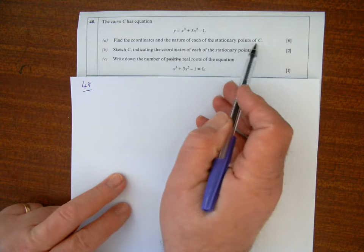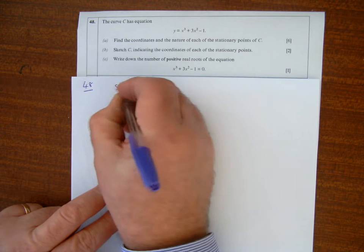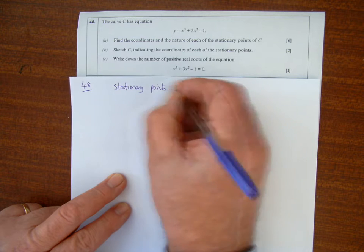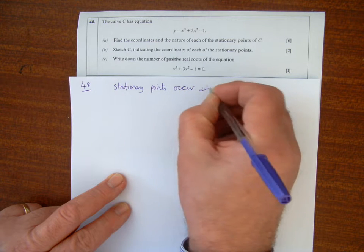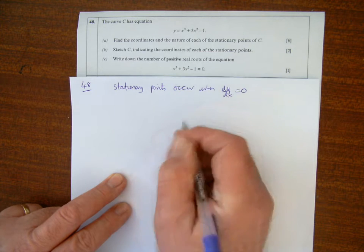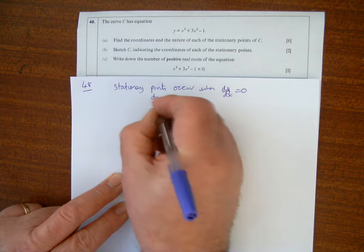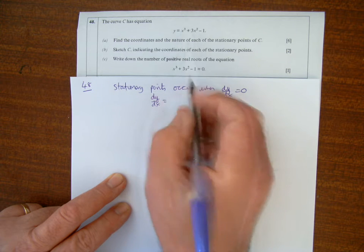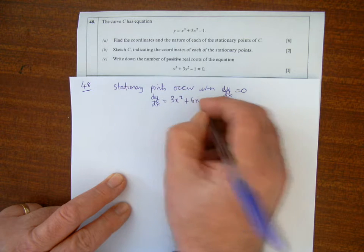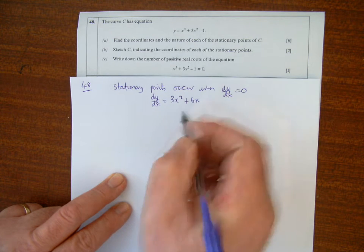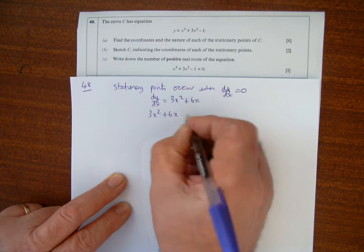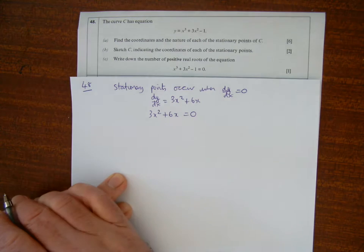To find the coordinates and nature of stationary points, we need points where dy/dx equals zero. Differentiating, dy/dx of x³ is 3x², and 3x² differentiates to 6x. The constant 1 becomes 0. Now solve 3x² + 6x = 0 to find the x coordinates of the stationary points.